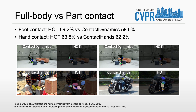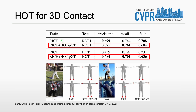Our full-body contact detector is comparable to existing part-specific detectors on foot contact and hand contact. We prove the usefulness of the HOT dataset on the dense 3D contact estimation task. We lift our 2D annotations to coarse 3D to facilitate the training of existing methods, and results show adding HOT data improves 3D contact estimation accuracy for in-the-wild images while not hurting the original datasets.